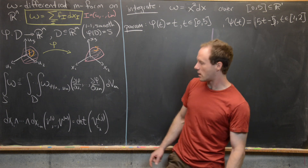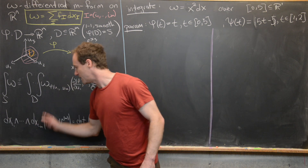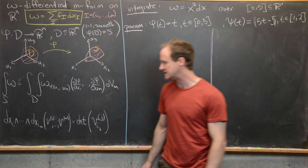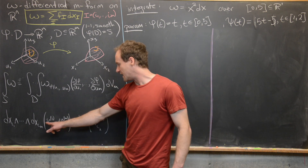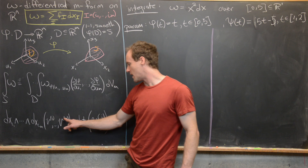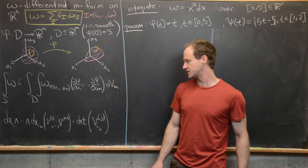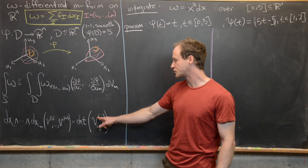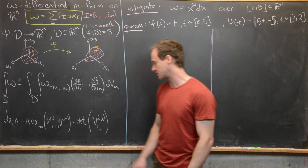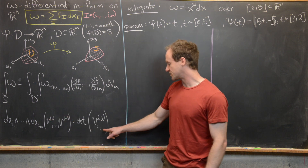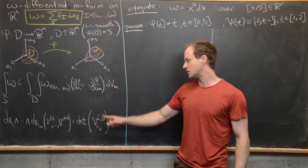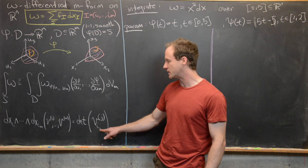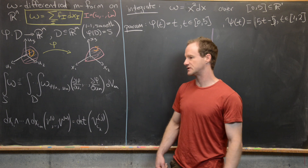The elementary m-form is defined as follows: dx_i1 wedge all the way up to dx_im, evaluated at vectors v1 up to vm (where those are n-dimensional vectors), is given by the determinant of an m by m matrix whose rows are defined by each of those vectors, with entries determined by the subscripts i1, i2, up to im.